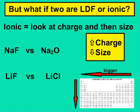But what if you have two that are LDF, or two that are ionic? If you have two that are ionic, you're going to first look at the charge and then the size. The higher the charge, the stronger the ionic attraction; or the smaller the size, the stronger the ionic attraction. So between NaF and Na2O — sodium has a plus one charge, fluoride is a negative one, and oxygen is a negative two in an ionic compound. Multiplying those together: one times one is one, and one times two is two. So Na2O has the greater charges, therefore it would have the stronger ionic attraction.